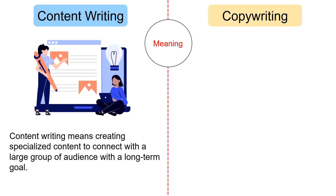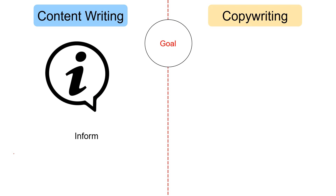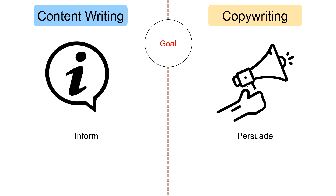Moving on to the differences between content writing and copywriting. In terms of meaning, content writing means creating specialized content to connect with a large group of audience with a long-term goal. As against, copywriting is a type of writing in which the writer uses a set of words that compels the reader to take some action, i.e., for a short-term goal. Regarding goal, content writing is about writing content such as a blog or article to inform the audience or make them aware of something. As against, copywriting means writing in a way that persuades people to take the desired action — so it is psychological and intentional.